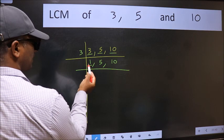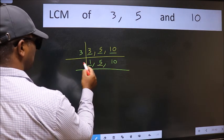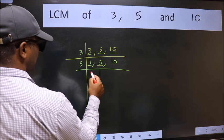Now we got 1 here so focus on the next number 5. 5 is a prime number so 5 goes into 5 once.